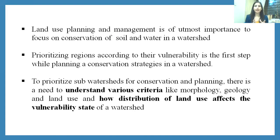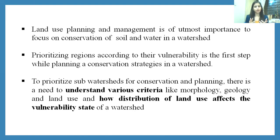Land use planning and management is of utmost importance and is required when we focus on the conservation of soil and water in the watershed. For that we need to prioritize the regions in the watershed according to their vulnerability — to know which regions we should focus on first. To prioritize the subwatersheds for conservation and planning, there is a need to understand various criteria like morphometry, geology, and land use, and how the distribution of different land uses affects the vulnerability state of the watershed.